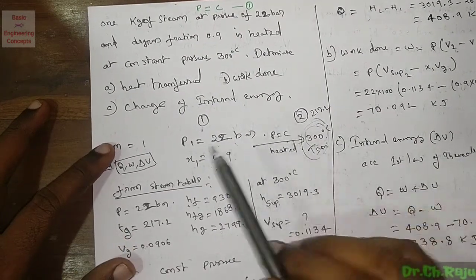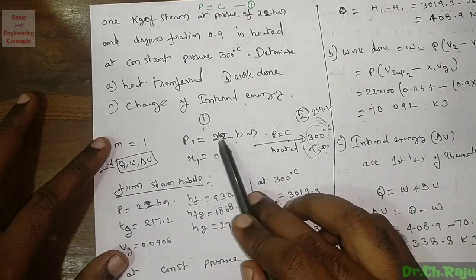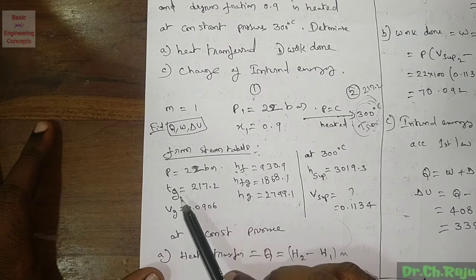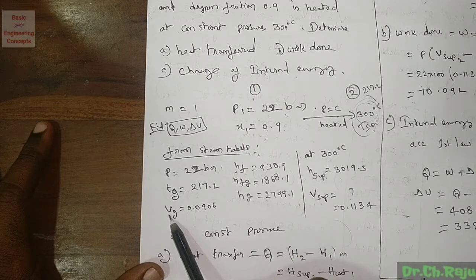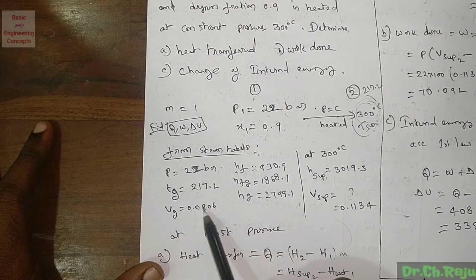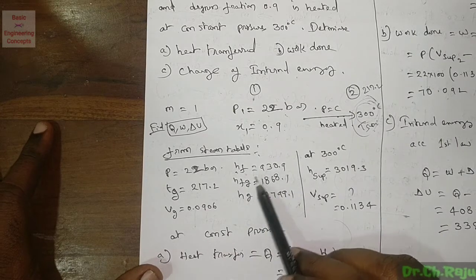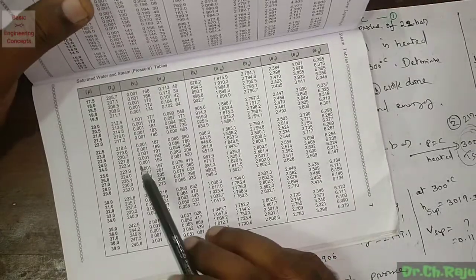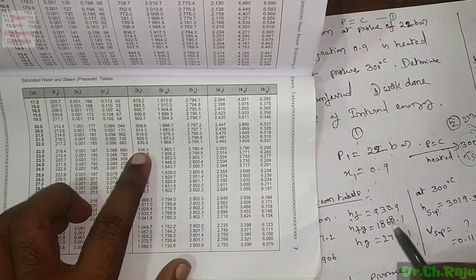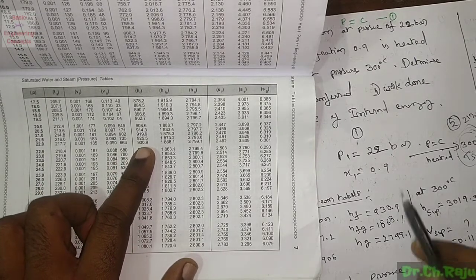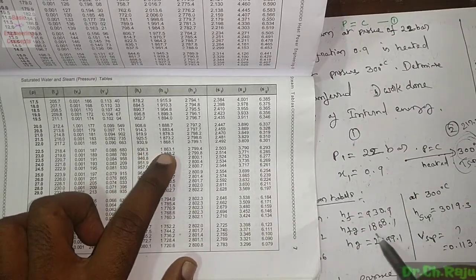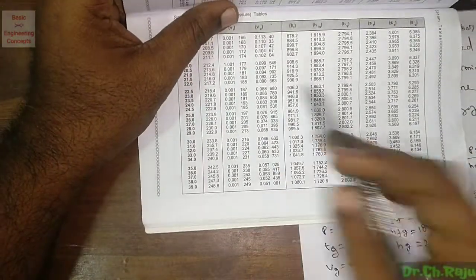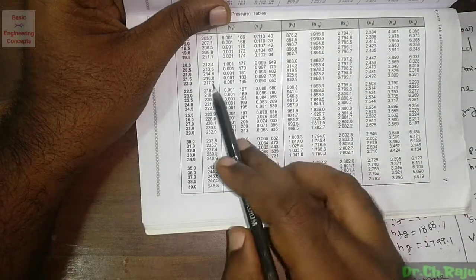From the steam tables at 22 bar: saturation temperature T = 217.2°C, specific volume Vg = 0.0906 m³/kg, hf = 930.9 kJ/kg, hfg = 1862 kJ/kg, and hg = 2792.7 kJ/kg.